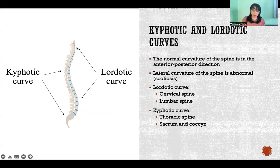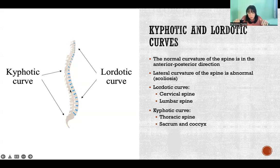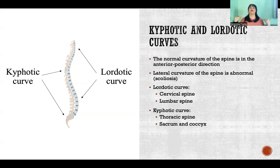So a kyphotic curve — if we look in our picture here — this side is the posterior side of the spine, as you can tell by the spinous processes on the vertebrae, and then this side is the anterior side. The kyphotic curves are here in the thoracic spine and down here at the sacrum and coccyx, showing a curvature in the forward direction. The lordotic curves are in the cervical spine and the lumbar spine, and those curves are in the opposite, backward-posterior direction.